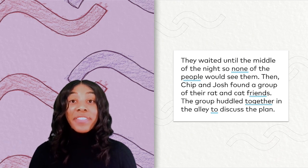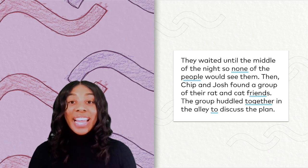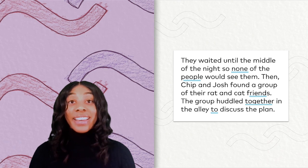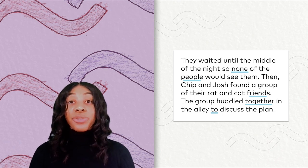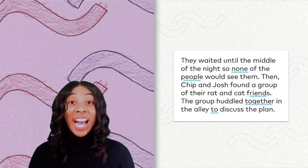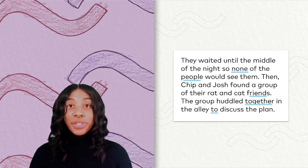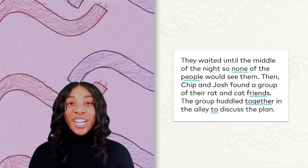They waited until the middle of the night, so none of the people would see them. Then Chip and Josh found a group of their rat and cat friends. The group huddled together in the alley to discuss the plan. We had five more high-frequency words on this page: none, people, friends, together, and to. Make sure you're jumping for every high-frequency word.